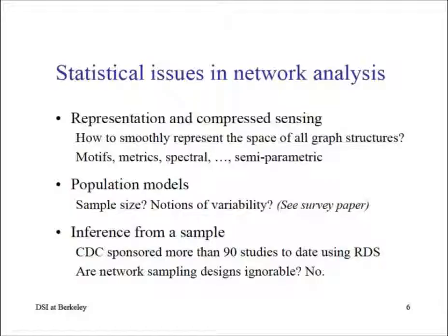The third problem is inference from a sample. The CDC has sponsored more than 90 studies and spent millions of dollars using link-tracing designs — strategies that leverage social structure to acquire a sample. Respondent-driven sampling, or RDS, is one such design. If you acquire a sample with such a strategy, the statistical question is: is the sampling design ignorable? The answer is no. Yet people still do inference assuming ignorability — I'll explain why that's wrong and what the right approach is.